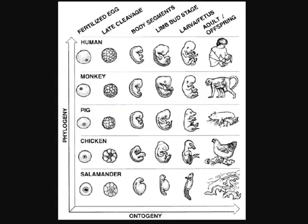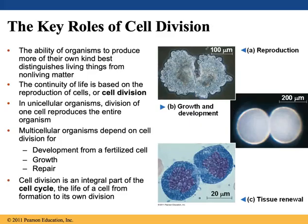Remember, we all begin as just one cell — the merging of a sperm and an egg. We'll talk more about this in the following chapters. Multicellular organisms depend on cell division for three things: development from that fertilized egg, growth, and repair. Cell division is an integral part of the cell cycle, which encompasses the life of a cell from formation to its own division.